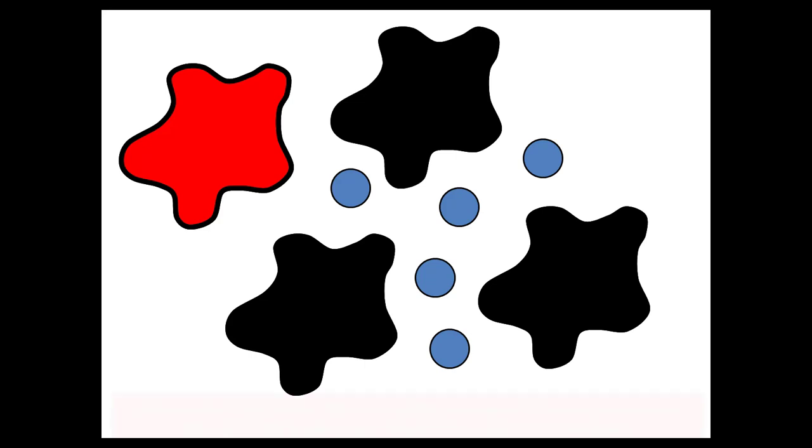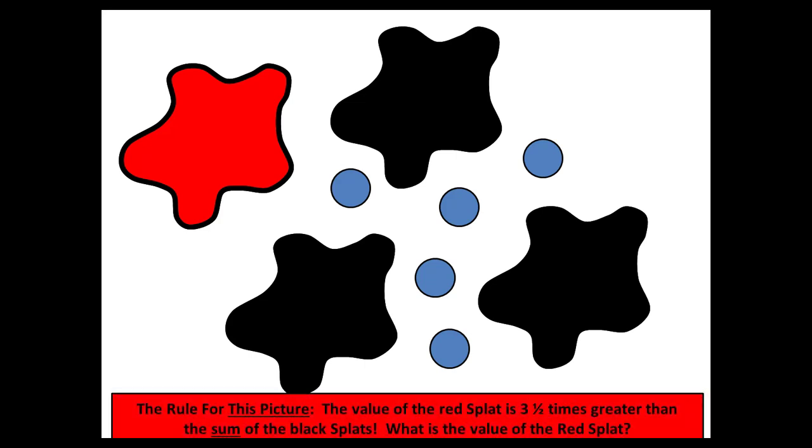Level five is even more challenging. The rule for level five is the value of the red splat is three and one half times greater than the sum of the black splats. What is the value of the red splat? The total is 32.